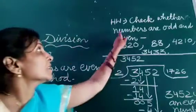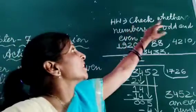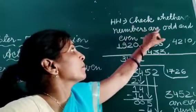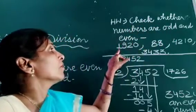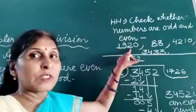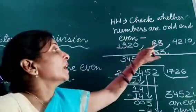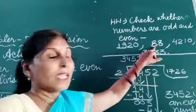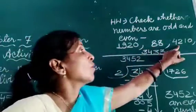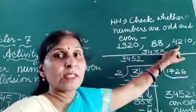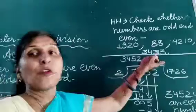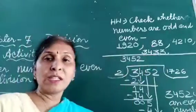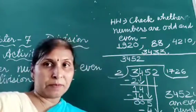This is your homework: check whether the following numbers are odd or even — 19208, 88421, 0, 3433, 2334, 3455, 6788, 9999, 10.